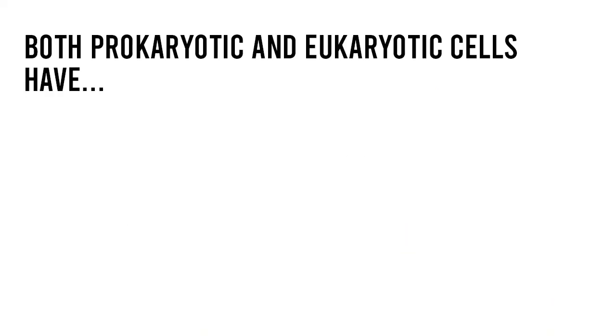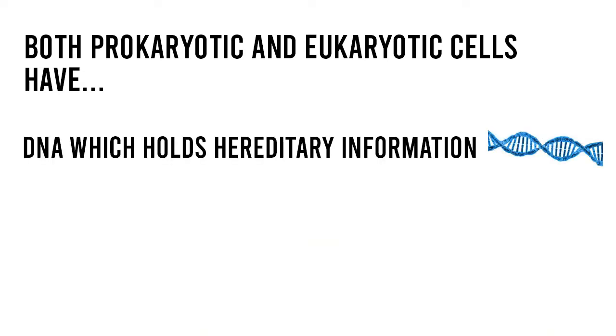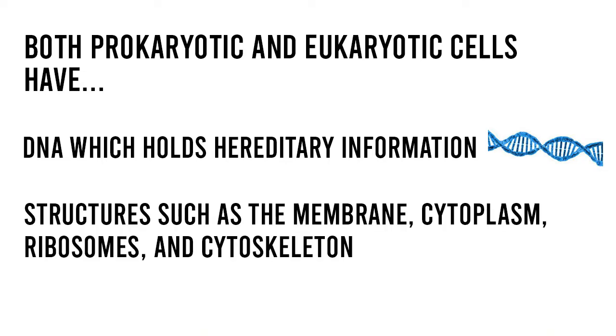Both prokaryotic and eukaryotic cells have a few similarities such as having DNA which holds hereditary information, and the fact that they share some structures including the cytoplasm, ribosomes, and a cytoskeleton.